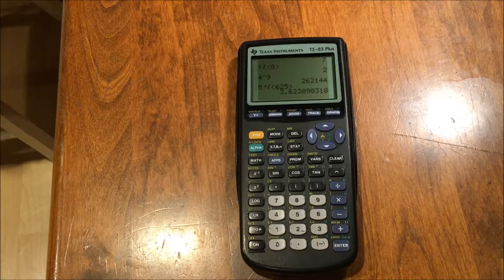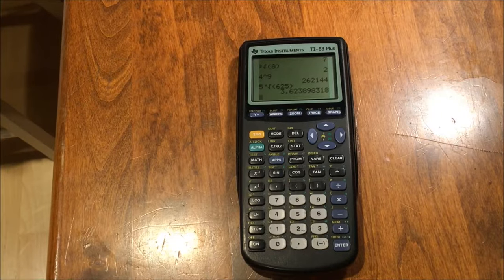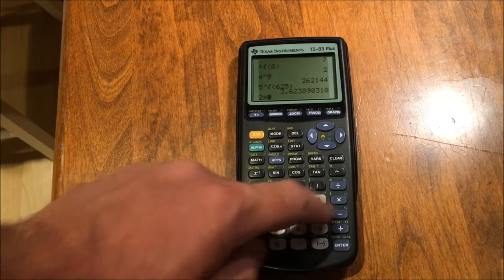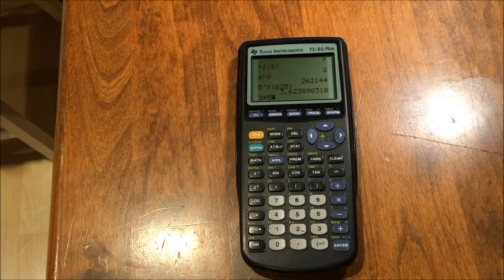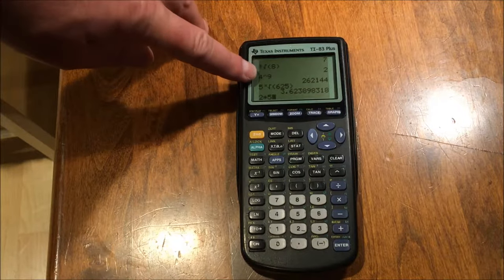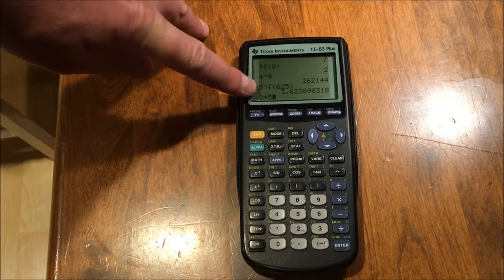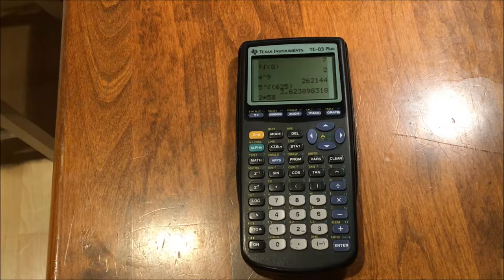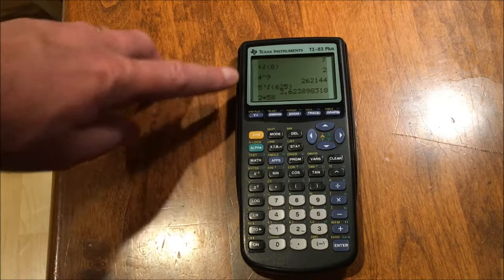As you can see, if we get an irrational number, we get a couple decimal places. One, two, three, four, five, six, seven, eight, nine. So, the floating point number system on this calculator defaults to nine decimal places. I also want you to notice how many rows of data I can get on one screen. One, two, three, four, five, six, seven, eight. It's eight rows long, so you can see quite a history of your previous calculations.